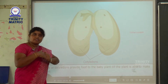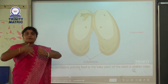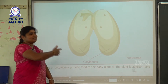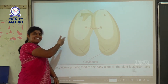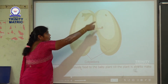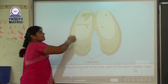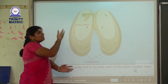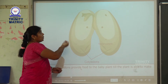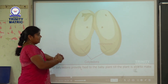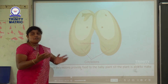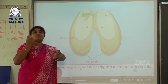We wear woolen clothes because they protect our body from the cold. In the same way, the seed has a seed coat. The outer seed coat protects the seed from harsh conditions. The seed coat protects the seed.